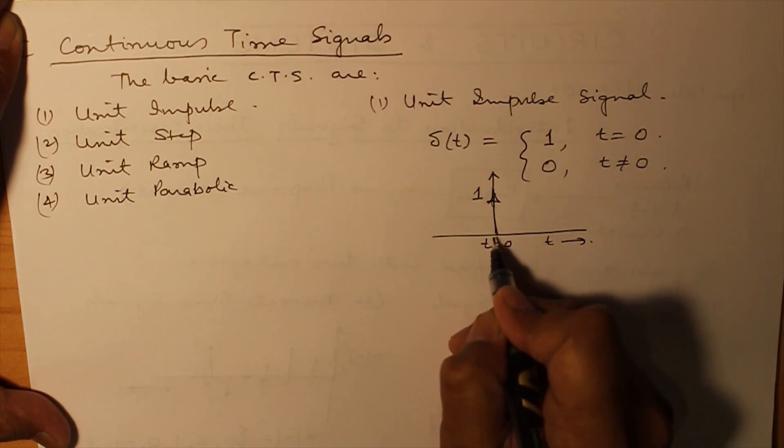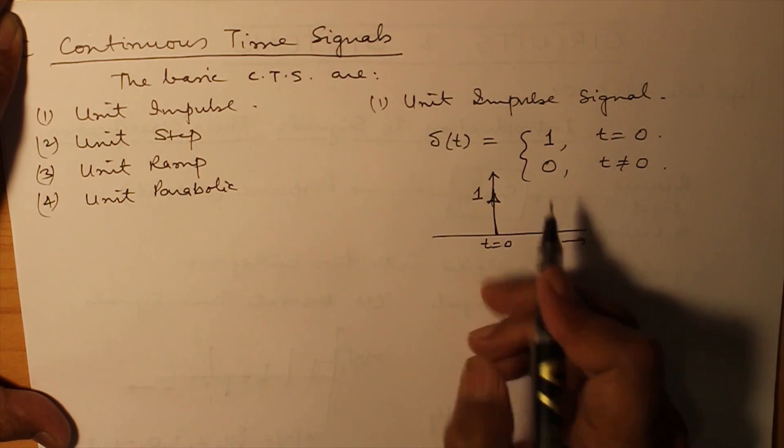And except this value at t is equal to 0, rest places the value is 0. That is a unit impulse signal.